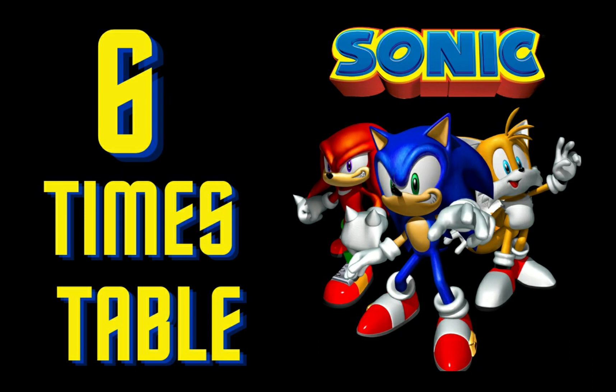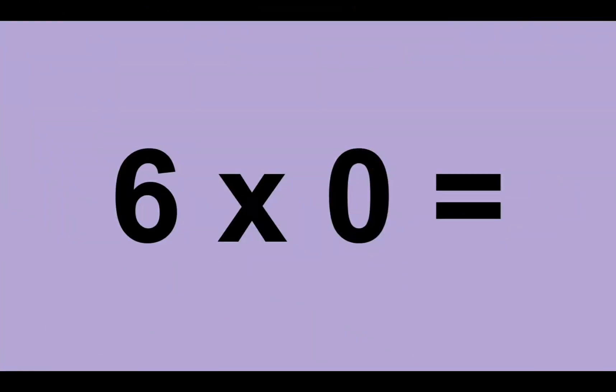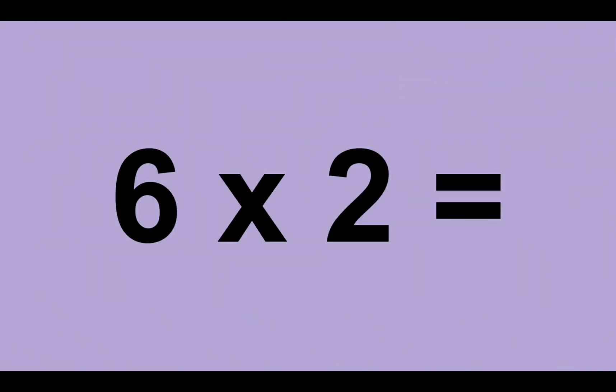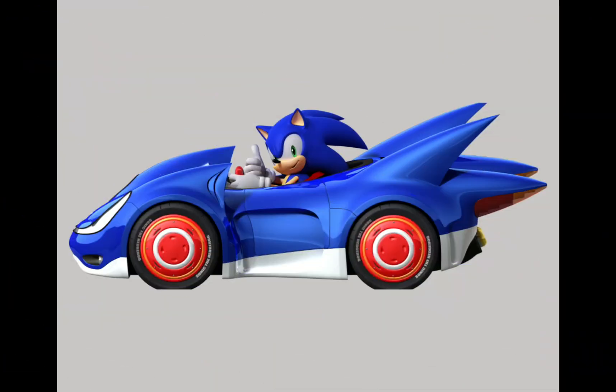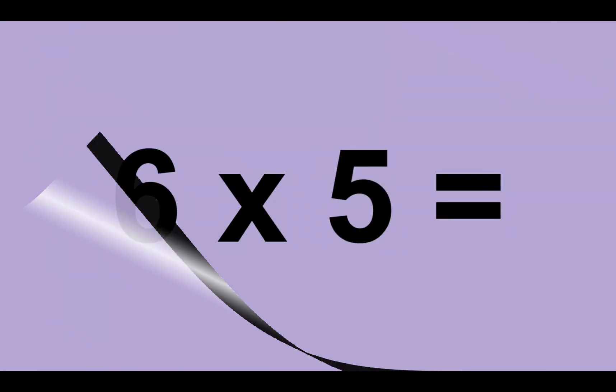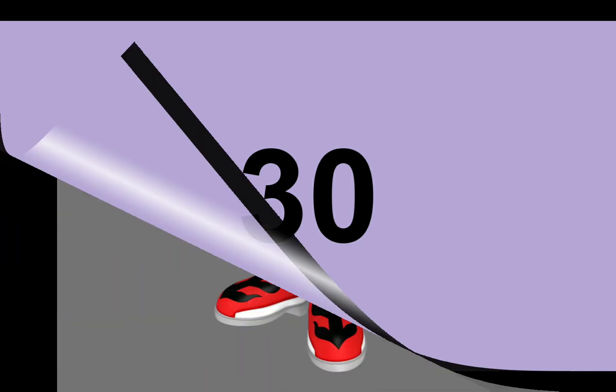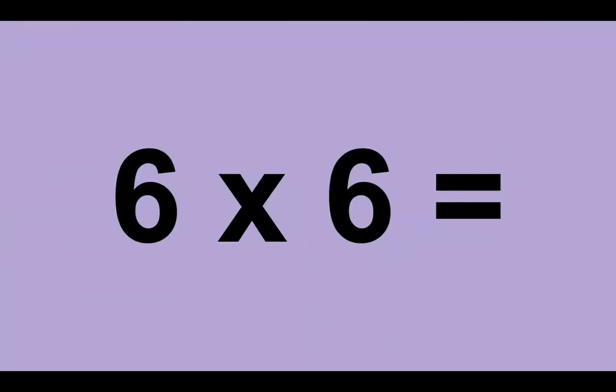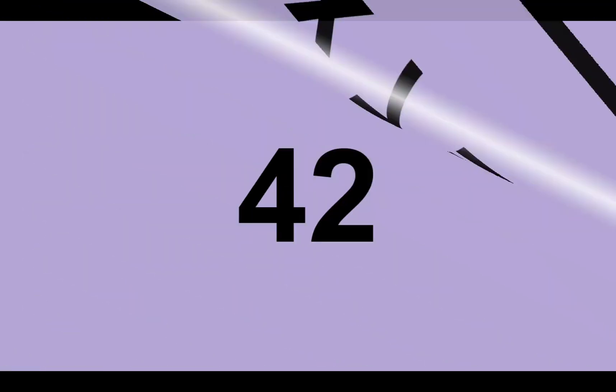Six times zero equals zero. Six times one equals six. Six times two equals twelve. Six times three equals eighteen. Six times four equals twenty-four. Six times ten equals sixty.